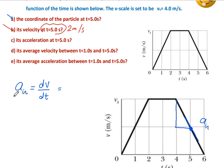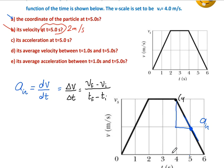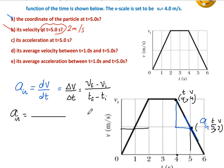Instantaneous acceleration equals delta v by delta t: v final minus v initial, divided by t final minus t initial. Using the two points (4, 4) and (5, 2) on the graph, the instantaneous acceleration equals 2 minus 4, divided by 5 minus 4, which equals minus 2 meters per second squared.